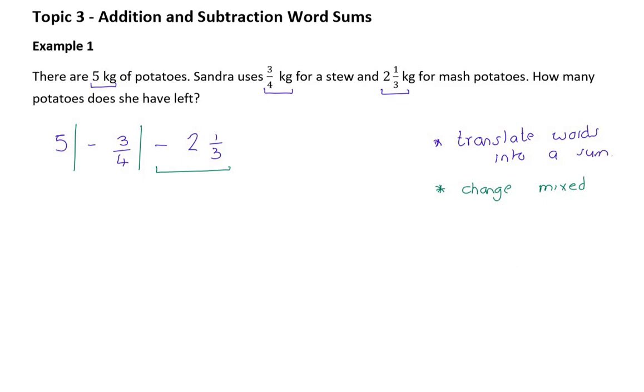So don't forget that we change mixed numbers to improper fractions. So my next step is going to be to change the mixed number. So that's minus, that's got nothing to do with my mixed number. If I have 2 wholes, each of them in 3 pieces, that'll be 6 pieces, and then I have 1 left over. So that's 7 pieces, and each whole was divided into 3 pieces. So that's my second step. Change my mixed number into an improper fraction.